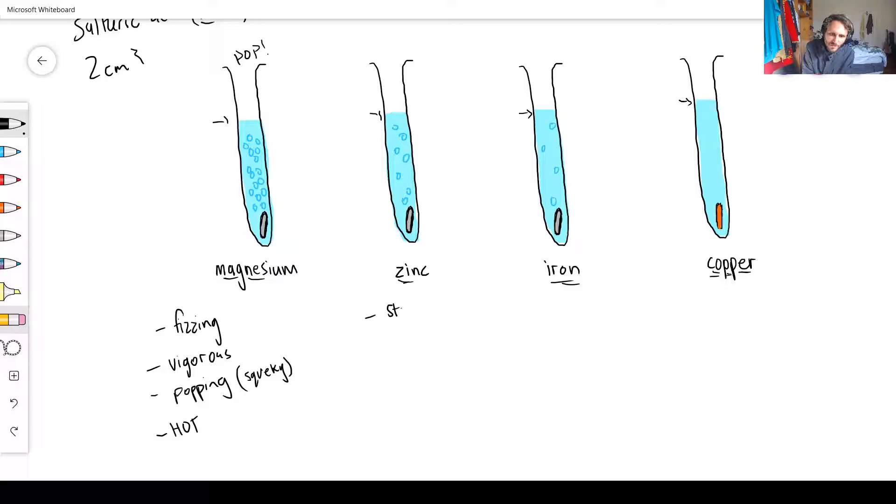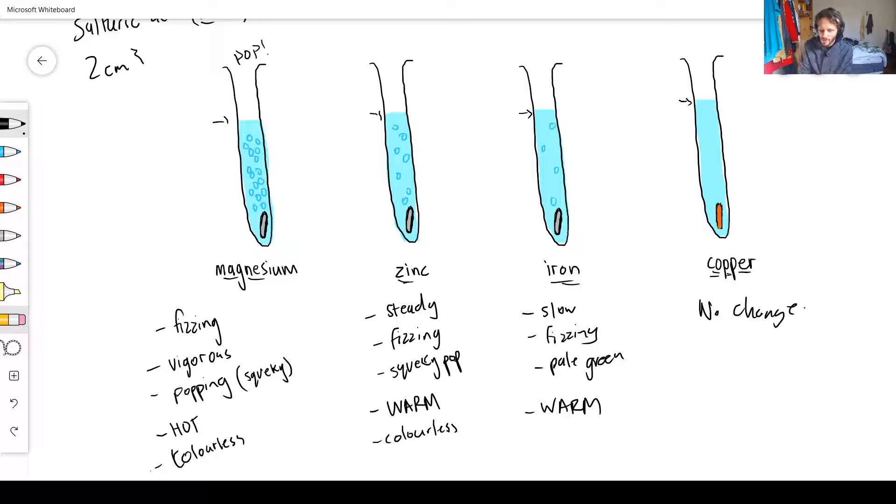Over here it is a steady reaction, not vigorous. There is fizzing and a squeaky pop as well. This one's not that hot but we can say that it is warm. This one is a slow reaction, there is fizzing, and it forms this sort of pale green color. It's important to note that with these ones, these are colorless, also colorless here. This one also becomes a bit warm.